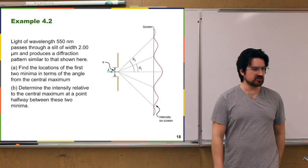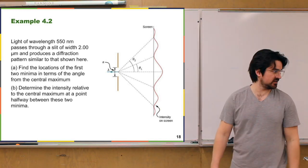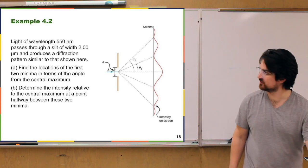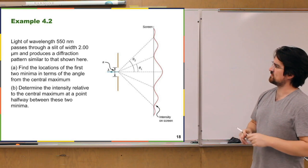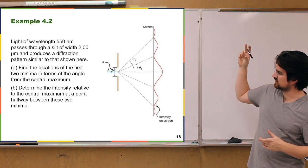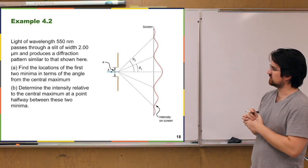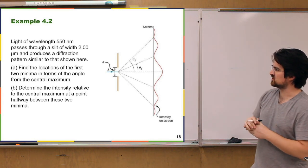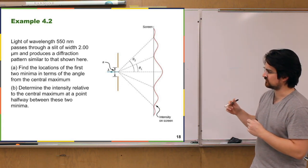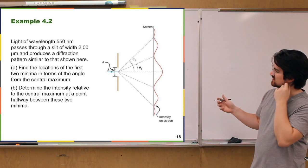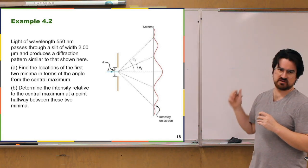Hard stuff mostly out of the way — let's look at an example and use some of that hard-fought information. We have a light wavelength of 550 nanometers passing through a slit of width 2 micrometers, which produces a diffraction pattern shown here. Find the location of the first two minima in terms of the angle from the central maximum, and then determine the intensity relative to the central maximum at a point halfway between those angles.